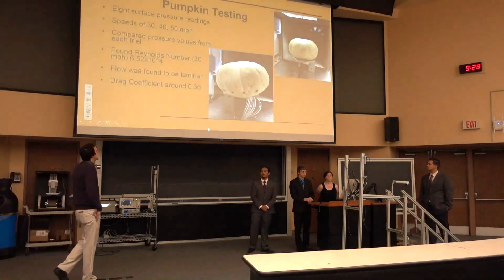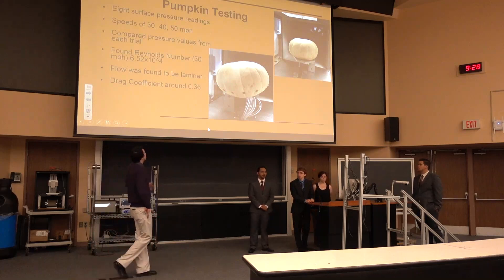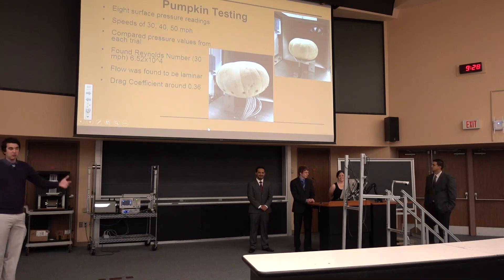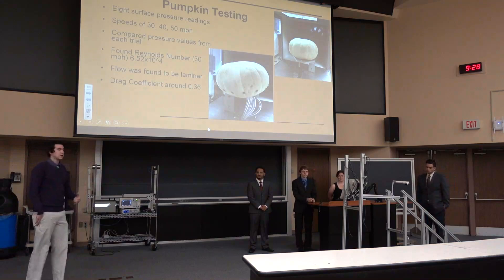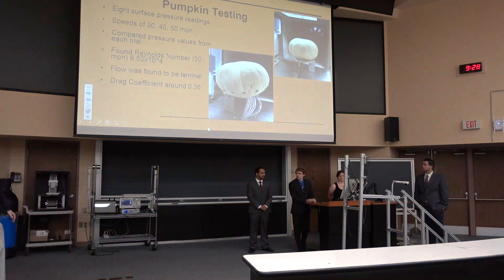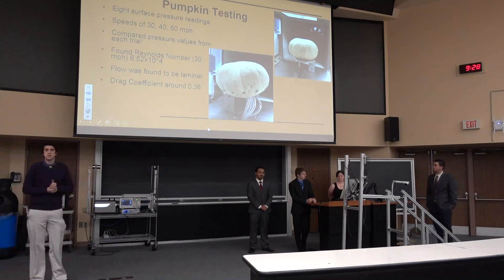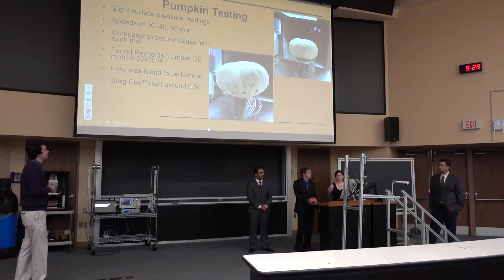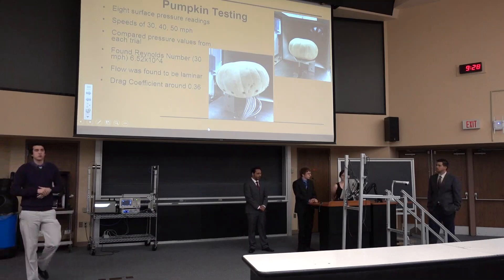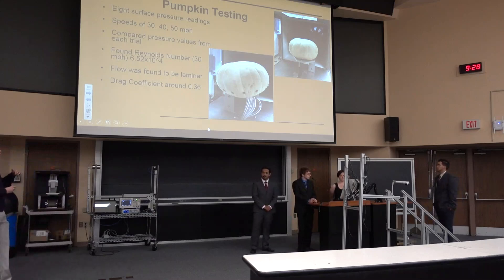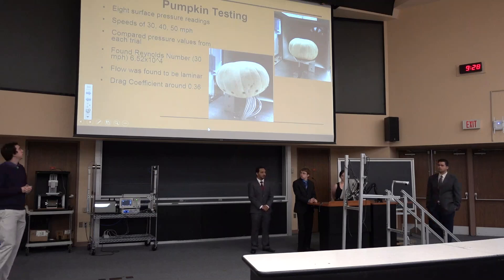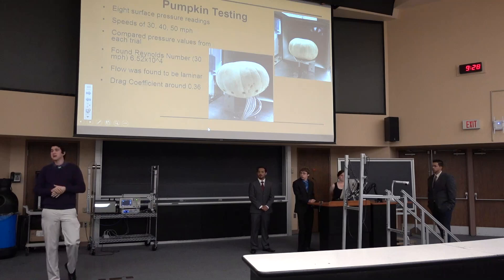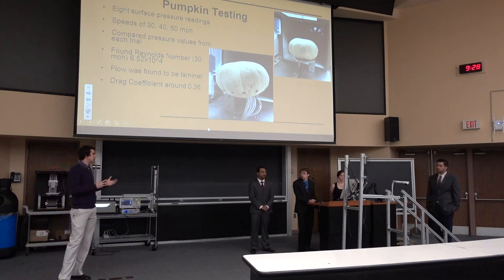With any projectile motion, it has its own drag coefficient and drag force. So we decided to put the pumpkin in the wind tunnel. In the front we had eight pressure ports drilled. We replicated the fluids experiment we did last year, taking eight surface pressure readings and measuring the pressure distribution. We did speeds of 30, 40, and 50 miles per hour using 30 as our control. We found the Reynolds number at 30 miles per hour to be 6.52 times 10 to the fourth. Using our fluids knowledge, the flow around the pumpkin at that number is laminar. With the help of Dr. Colleen and the fluids lab, we found the drag coefficient of our pumpkin to be 0.36. We chose to neglect this along with the Magnus effect because it is so negligible in the actual force calculations.